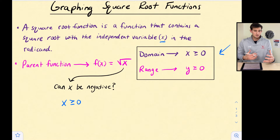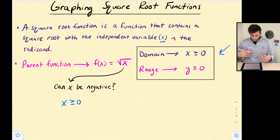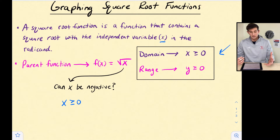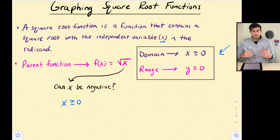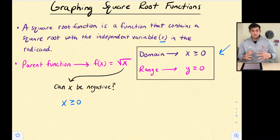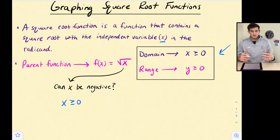We're going to see what this looks like when we graph our parent function in just a minute. Also, we need to know that our range is y is greater than or equal to zero. So essentially, our lowest point is going to be zero, and our point furthest to the left will also be zero.